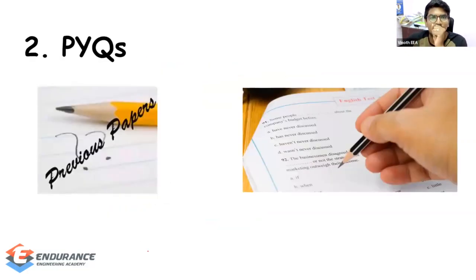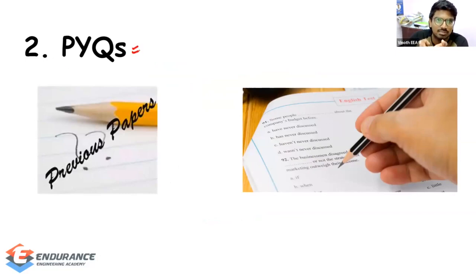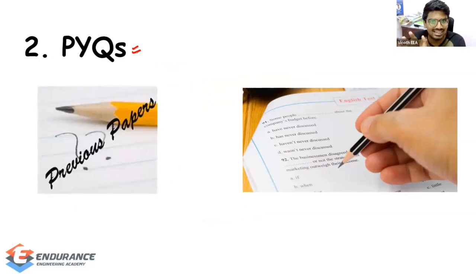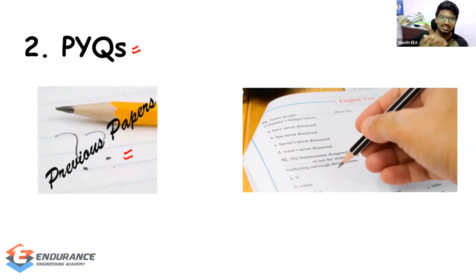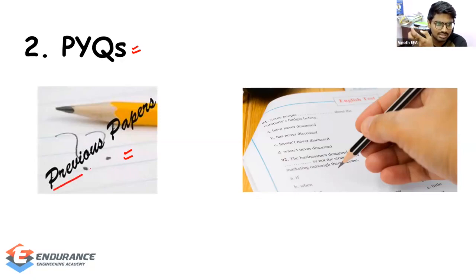Next — PYQs, or Previous Year Questions. Once your concept base is built, the obvious next step is to go through previous year questions. Your concepts are strongly prepared, and you check them by solving previous papers. If you have not studied correctly or thoroughly enough, solving previous papers will reveal that. That is why you check previous papers — they help you in multiple ways.